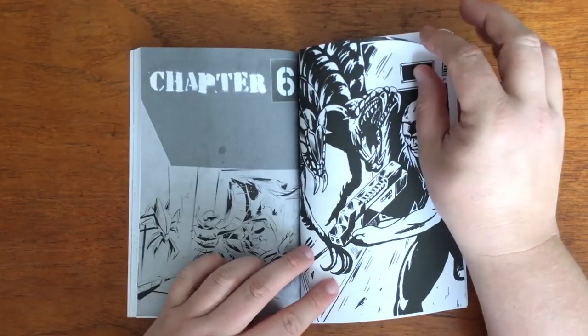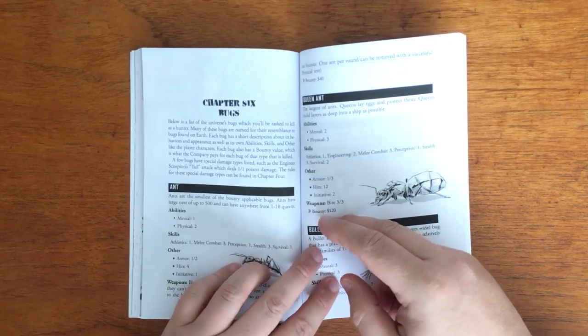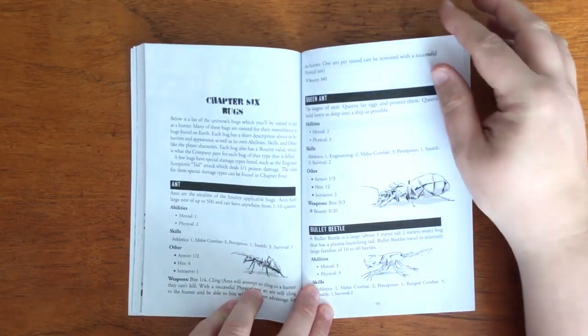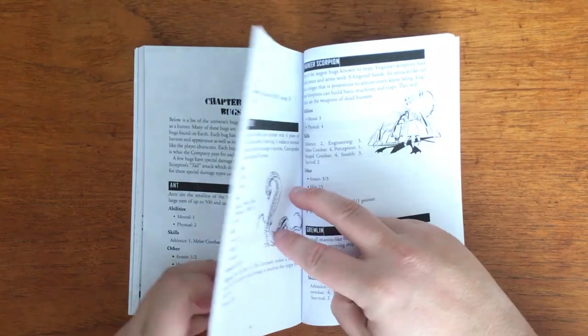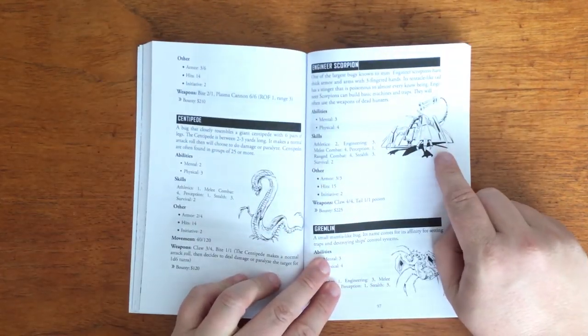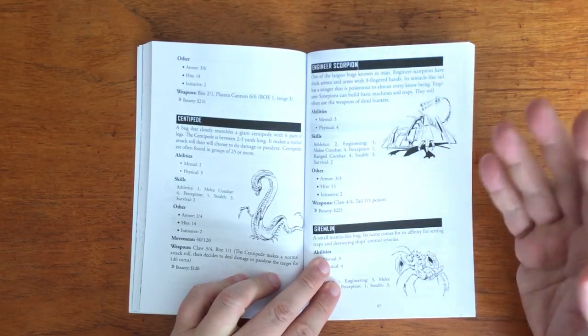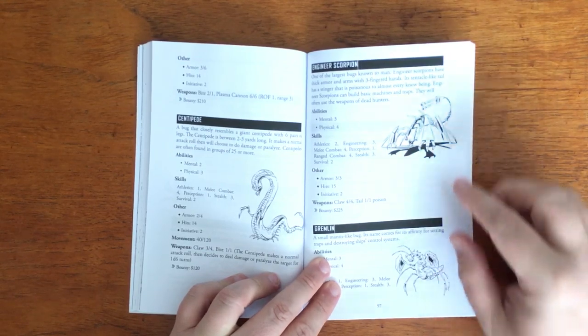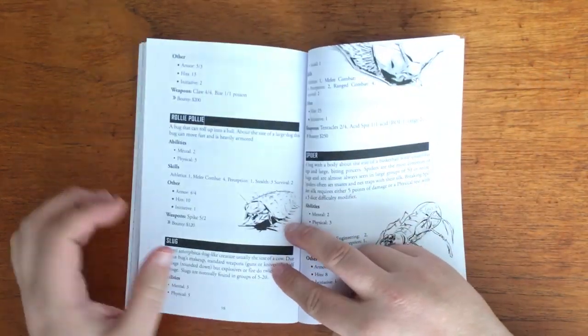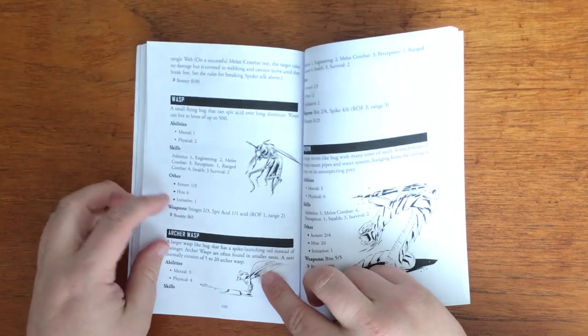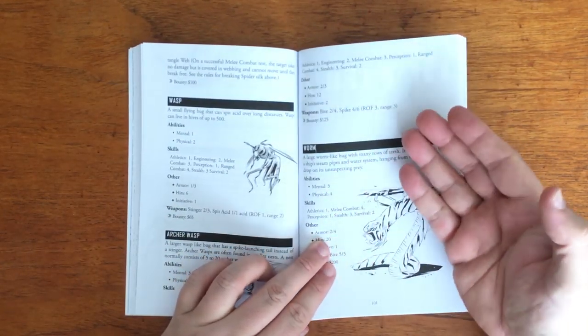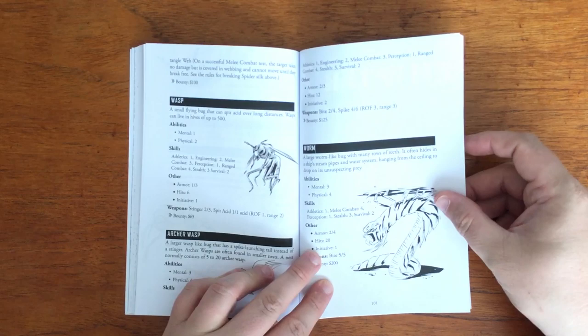It gives us the most common bugs that players should expect to face, starting them out and all include fairly rough sketches. There are some interesting ones such as the Engineer Scorpion that can build basic machines and traps from the weapons of dead hunters, gremlins that are known for setting traps and destroying ships control systems and archer wasps that have spike launching tails. The issue I have with this section is that only a few of the bugs have an actual size listed which leaves a bit of guesswork.